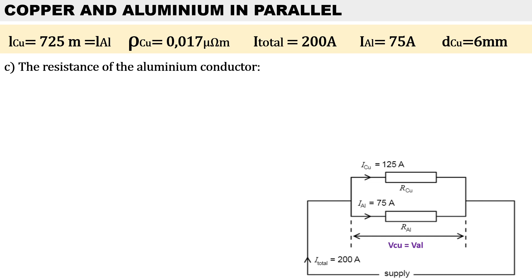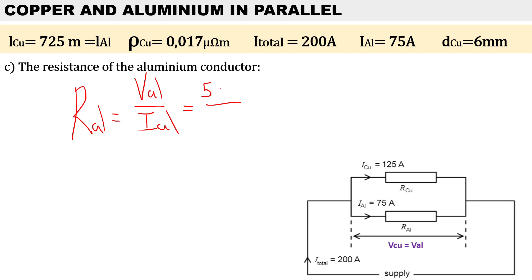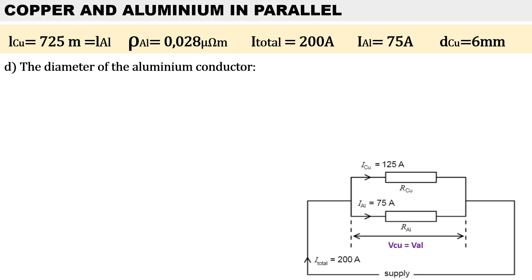In part c, we need to calculate the resistance of the aluminium conductor. The shortcut here is to use the voltage across the parallel combination divided by the current. The voltage is 54.5 volts and the current through the aluminium branch is 75 amps. Therefore the resistance for aluminium is 0.727 ohms.